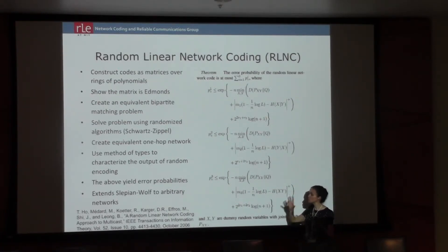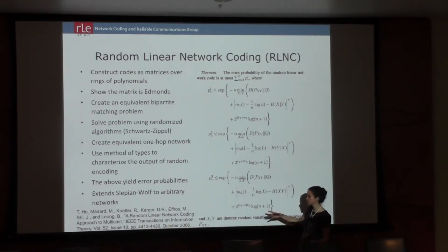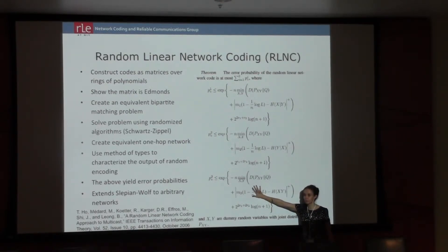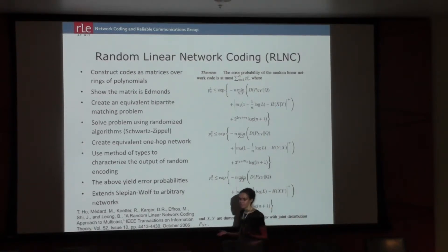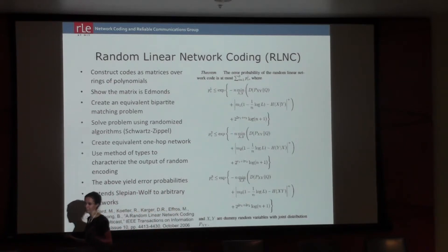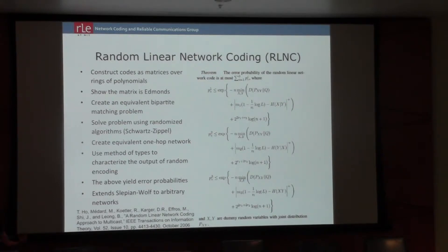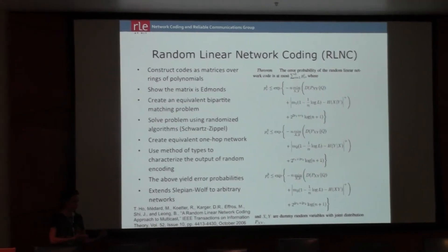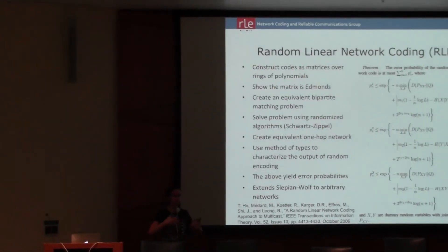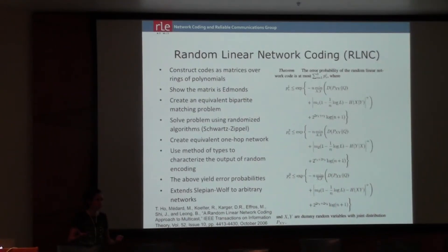One of the things this meant is that there was no competition for network resources among different receivers — completely different from the way things were being done using trees for routing. Also, the Slepian-Wolf distributed source coding result turns out to be achieved using random coding, the same coding used here. Slepian-Wolf was already a network code of depth one. Network coding is just compression over a network; source coding was compression over a single-hop network.